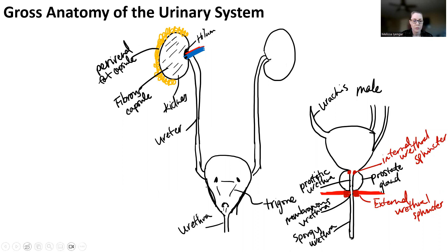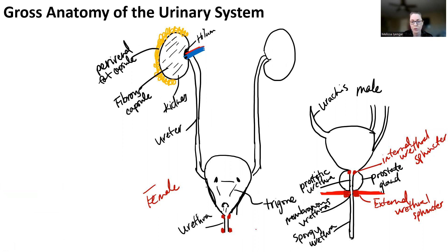For women — let's say this is the female side — they don't have a prostate gland. Their internal urethral sphincter is right at the base of the bladder, and then their external urethral sphincter is also in the urogenital diaphragm. Their urethra is much shorter, and the urethral orifice is basically right underneath that external urethral sphincter. That actually exits in the vestibule area, which is inside of the labia minora.